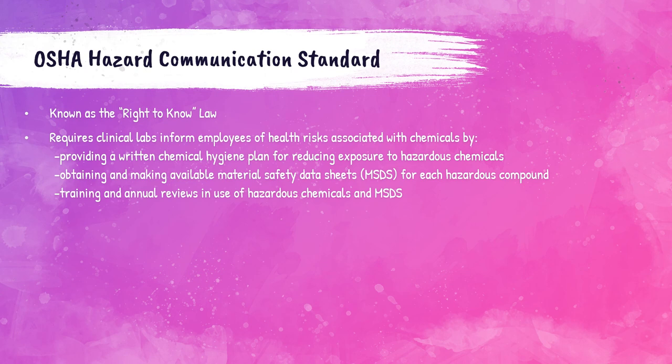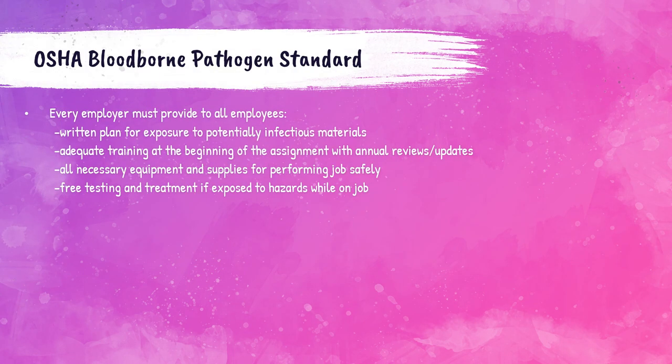The OSHA Bloodborne Pathogen Standard requires that employers provide all employees with a written plan for what happens if an employee is exposed to potentially infectious materials, adequate training at the beginning of employment as well as annual reviews, all necessary equipment and supplies for performing a safe job, and if an employee is exposed to hazards on the job, the employer must provide free testing and treatment.